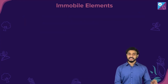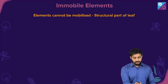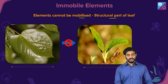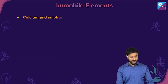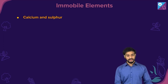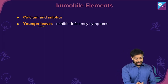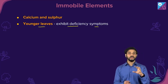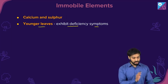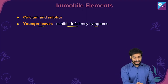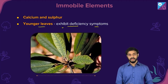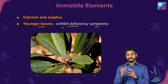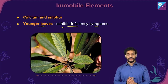Immobile elements are elements which do not move — they are part of the structural component of the leaf. These are calcium and sulfur. Younger leaves exhibit deficiency symptoms because these elements do not move from the older leaves to the newer ones, so younger leaves show yellowing while the older leaves remain lush green.